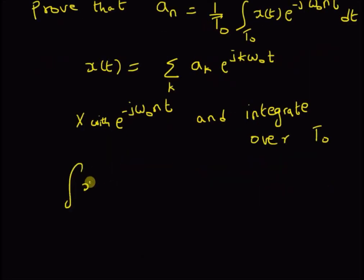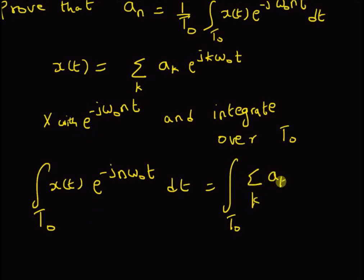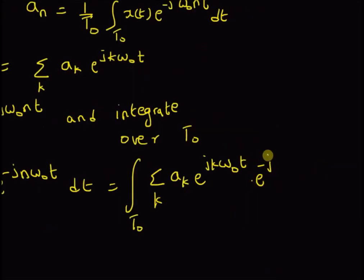Therefore, the equation becomes: integral of x(t) multiplied by e^(-jnω₀t) dt over the period T₀, and this should be equal to the integral over the time period T₀ of the summation over k of aₖ multiplied by e^(jkω₀t) · e^(-jnω₀t) dt.